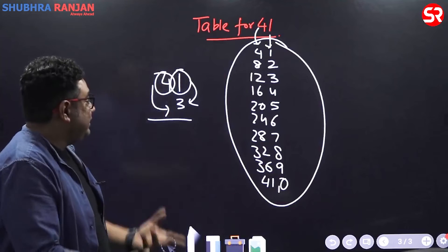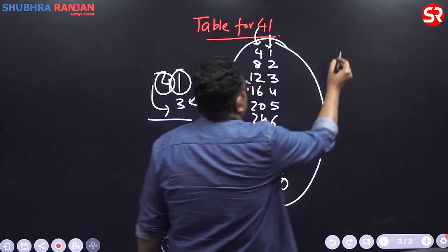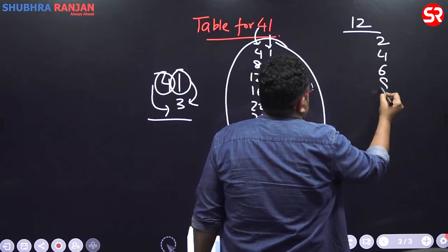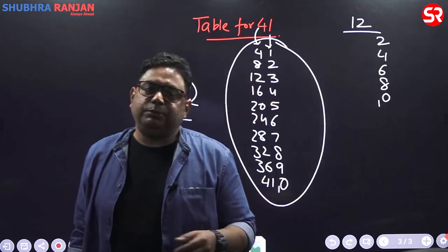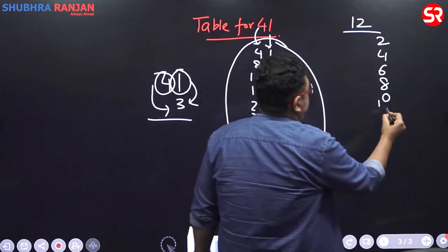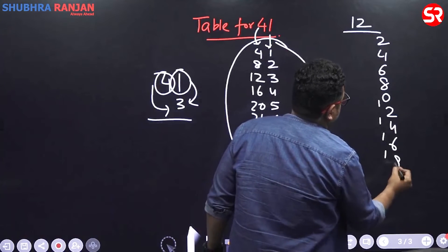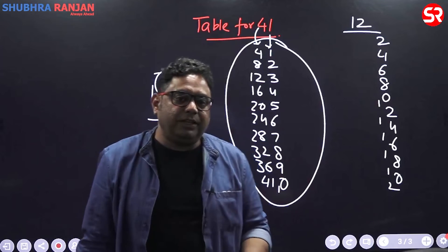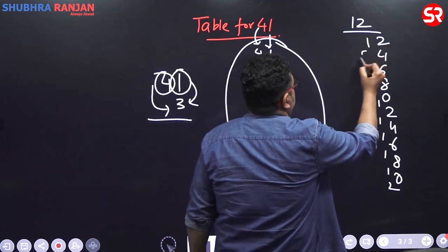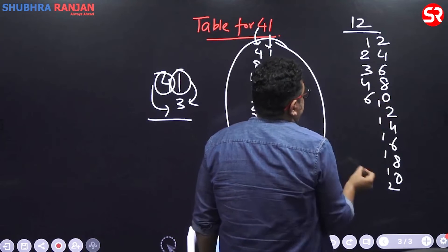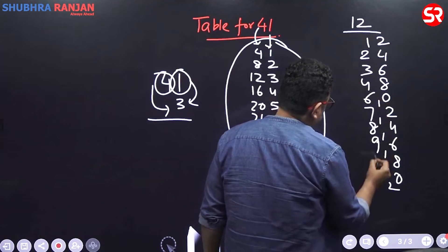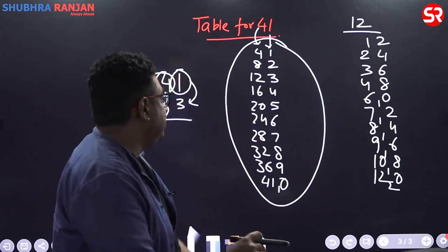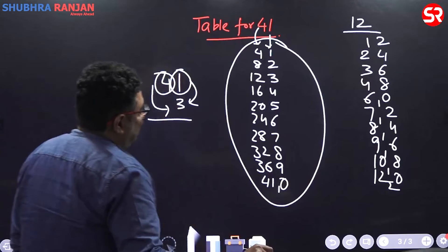All tables are like that. For example, table of 12: on this side write table of 2 — 2, 4, 6, 8, 10 (write 0, carry 1), then 12, 14, 16, 18, 20. On the other side, write table of 1: 1, 2, 3, 4, 5 plus 1 is 6, 6 plus 1 is 7, 7 plus 1 is 8, 8 plus 1 is 9, 9 plus 1 is 10, 10 plus 2 is 12. So we get table of 12: 12, 24, 36, 48, 60, 72, 84, 96, 108, 120.